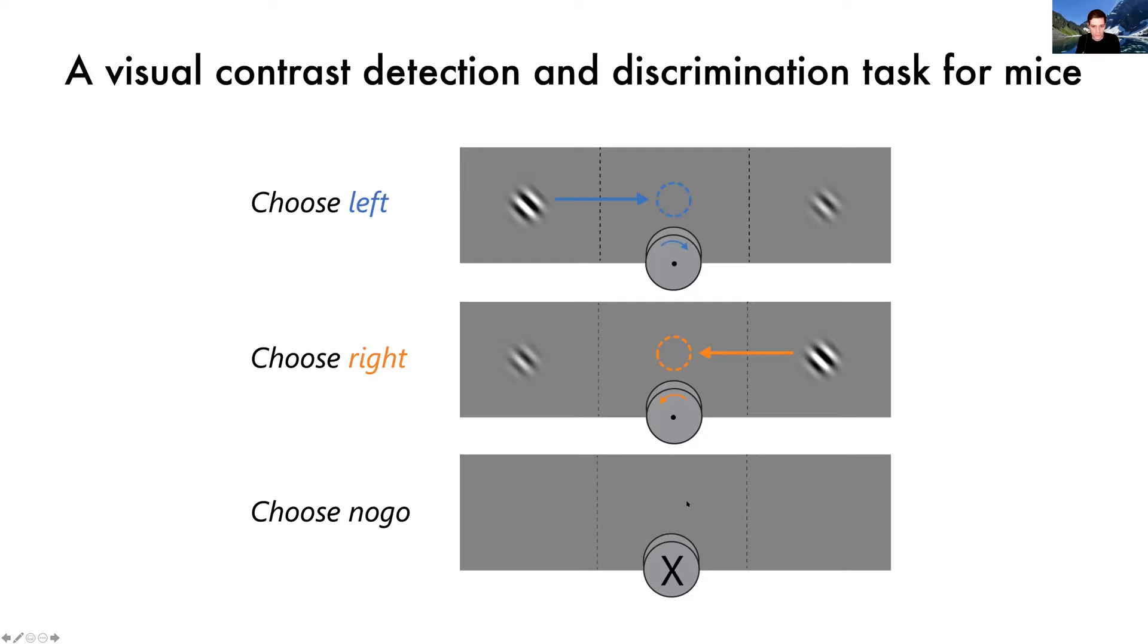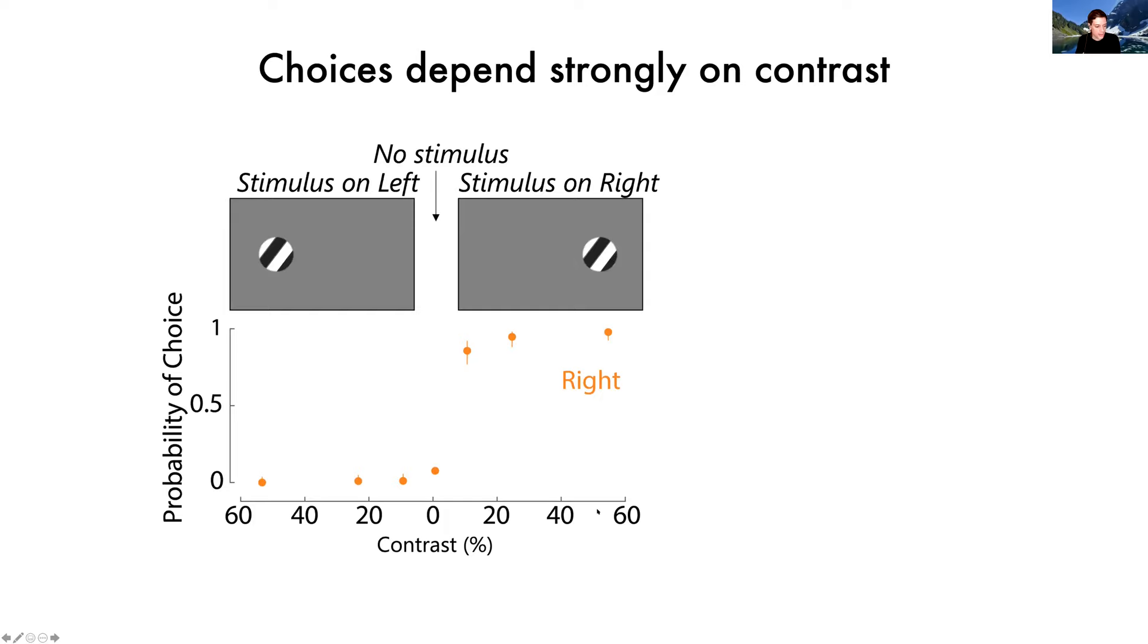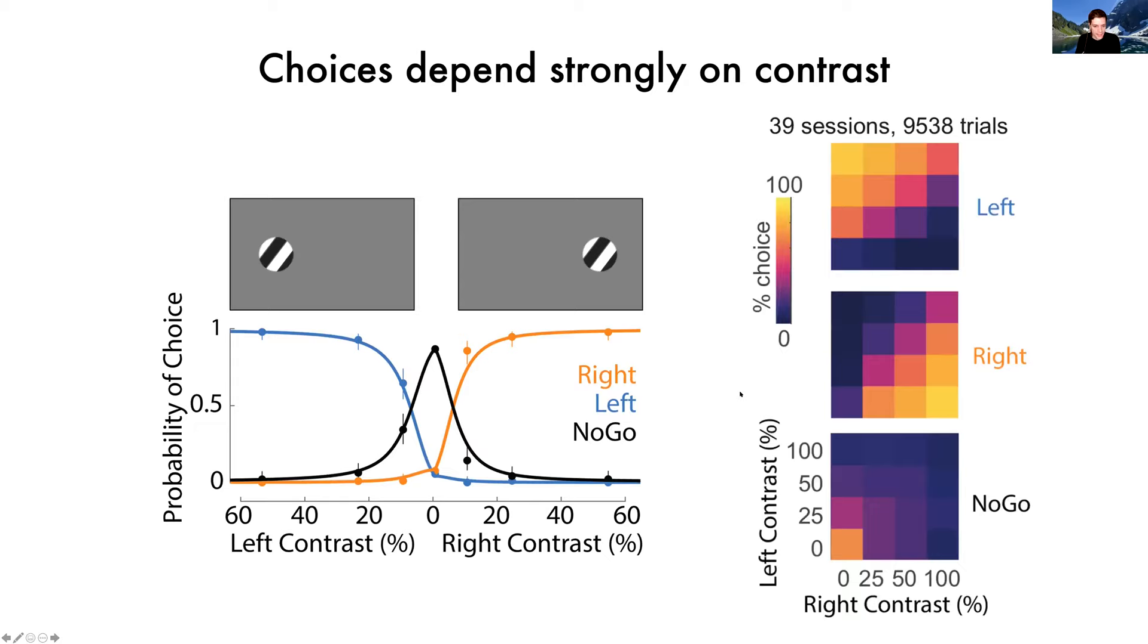They perform this task very well. Here's an example session where we can see, on the right side of this axis, trials in which stimuli were shown on the right side of the screen. And in orange dots, the probability that the mouse made a rightward choice, which you can see that they did with a high probability, which is correct. Likewise, when stimuli were on the left, on the left side of this axis, the mouse made high probability leftward choices and made these no-go responses, primarily only when the contrast was zero. Of course, they do make perceptual errors, such as these missed trials when a stimulus was shown, but the mouse failed to respond. And those are errors of detection, which is what we want to study. So maybe in the interest of time, I'll skip. This is the full behavioral performance matrix, and you can check out the paper for more detail.